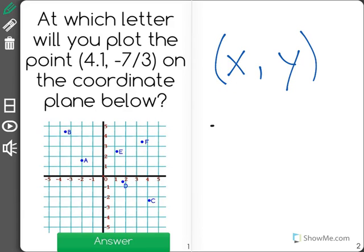Let's change that so it looks horizontal. Our horizontal value is 4.1, and our vertical value is negative 7 thirds.